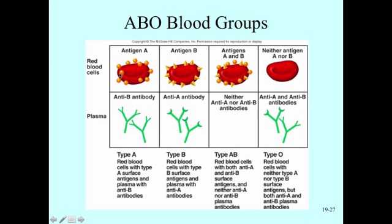These antigens found on our red blood cells are determined by genetics. It depends on what your mother and father's blood types are as to what your blood type is. So you're born with these — they are determined by genetics, and we have these antigens at birth.